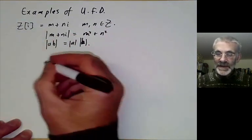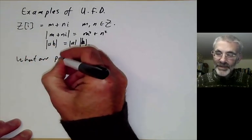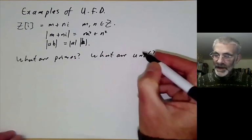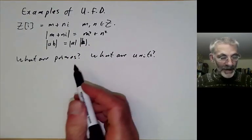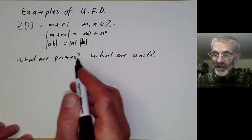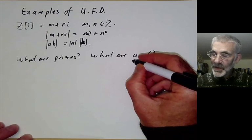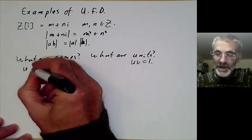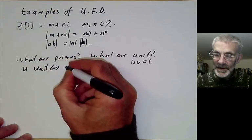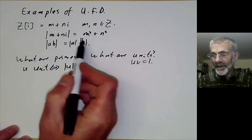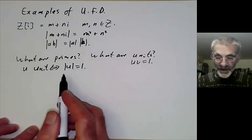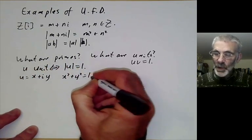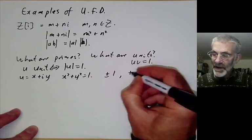What we want to do is discuss, for the Gaussian integers, what are the primes and what are the units? The units are quite easy to find. Something is called a unit if u times v equals 1 for some v — so it has an inverse. You can check fairly easily that u is a unit if and only if u has absolute value equal to 1. So if u equals x plus iy, this gives x squared plus y squared equals 1, which has just four solutions: plus or minus 1 and plus or minus i.